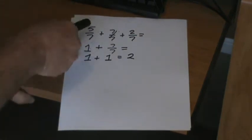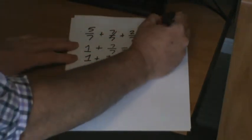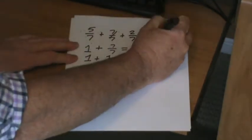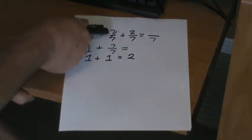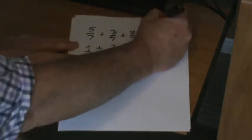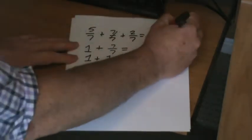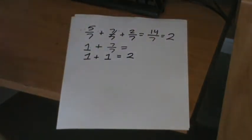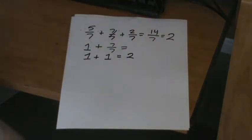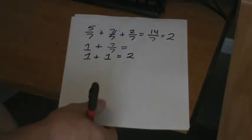We could also look at it if we were to add that straight across to see what we would get. We'd have 7 as our denominator. Add our numerators. 5 + 7 is 12, plus 2 is 14. We could say 14 divided by 7 equals 2. A couple of different ways we can approach these problems, as you're finding out.